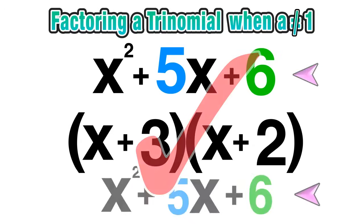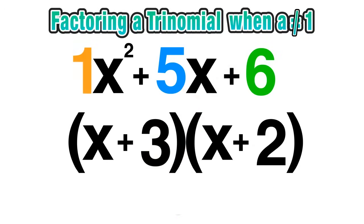Now this method always works out this way because x times x is always going to equal 1x². So our factors will always just have an x term in each one without a coefficient, and that's why that method only works when a is equal to 1.